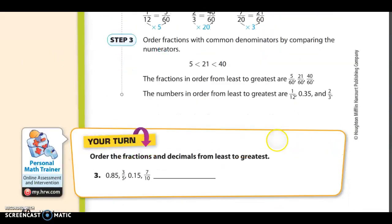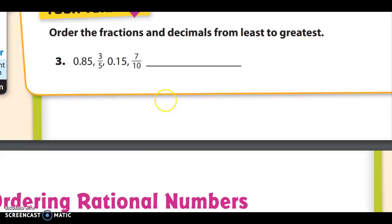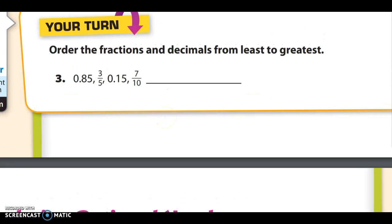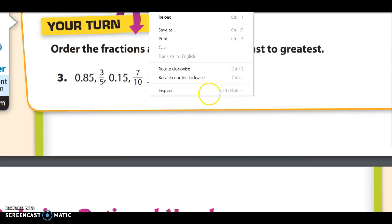Let's try the problems at the bottom of the page. I would recommend making these decimals — they're all pretty simple to find as a decimal. If you don't have one memorized, go back to page 59 and look at it. Try number three: ordering the fractions and decimals from least to greatest. Then resume the video to check your answer. I'm going to go back to page 59 and find three-fifths and seven-tenths on the number line.